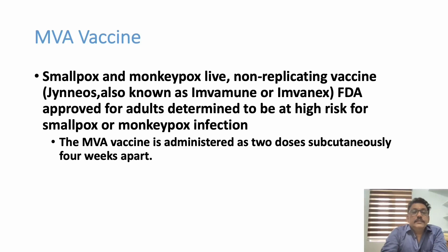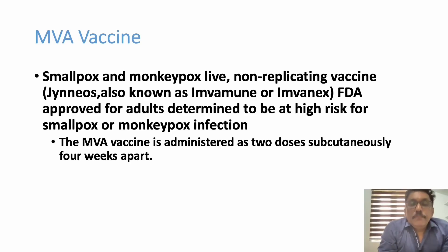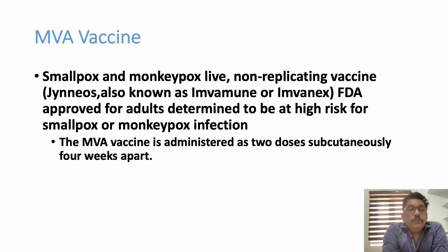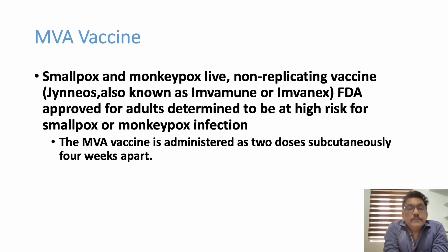A vaccine available in the US and FDA approved is JYNNEOS, also known as MVA-BN or Imvamune vaccine. It is currently not available in India. The MVA vaccine is administered as two doses subcutaneously, four weeks apart, and can be given as both post-exposure and pre-exposure vaccination in endemic areas.